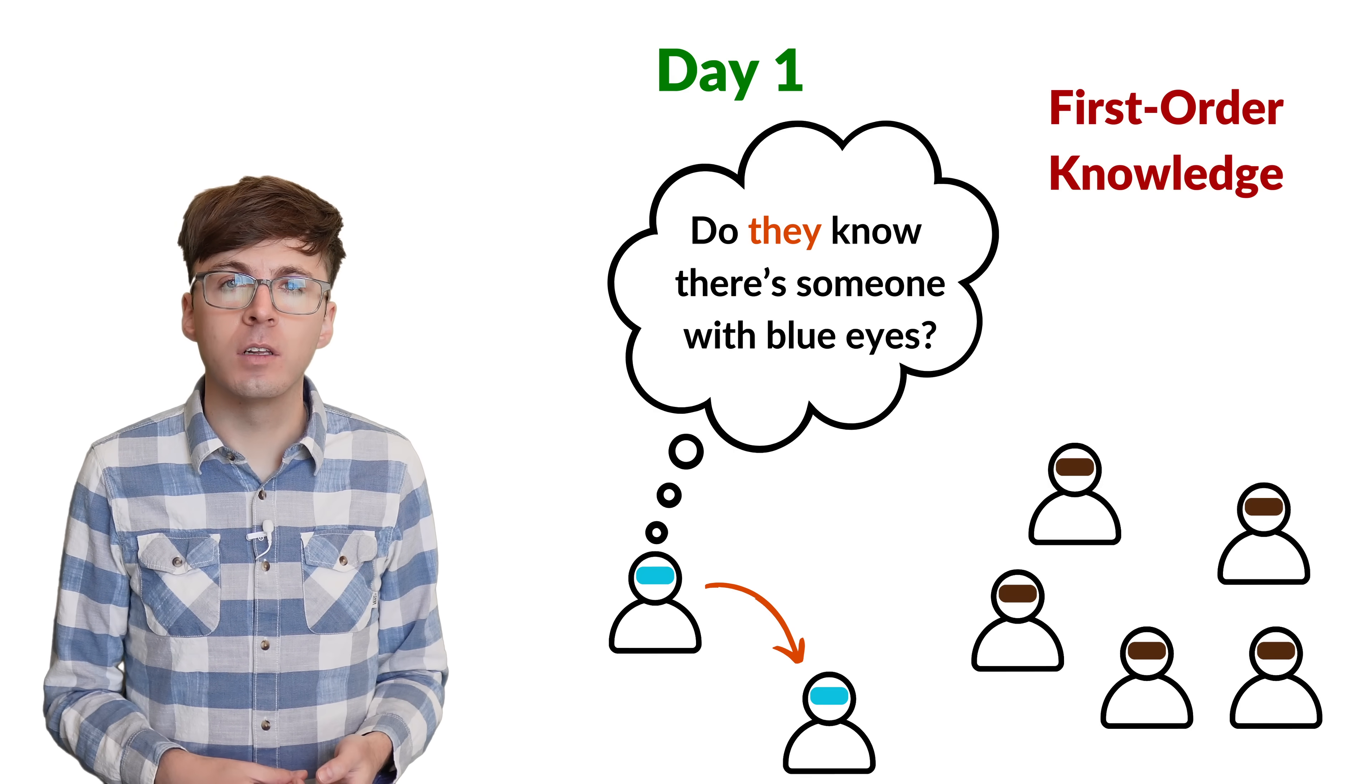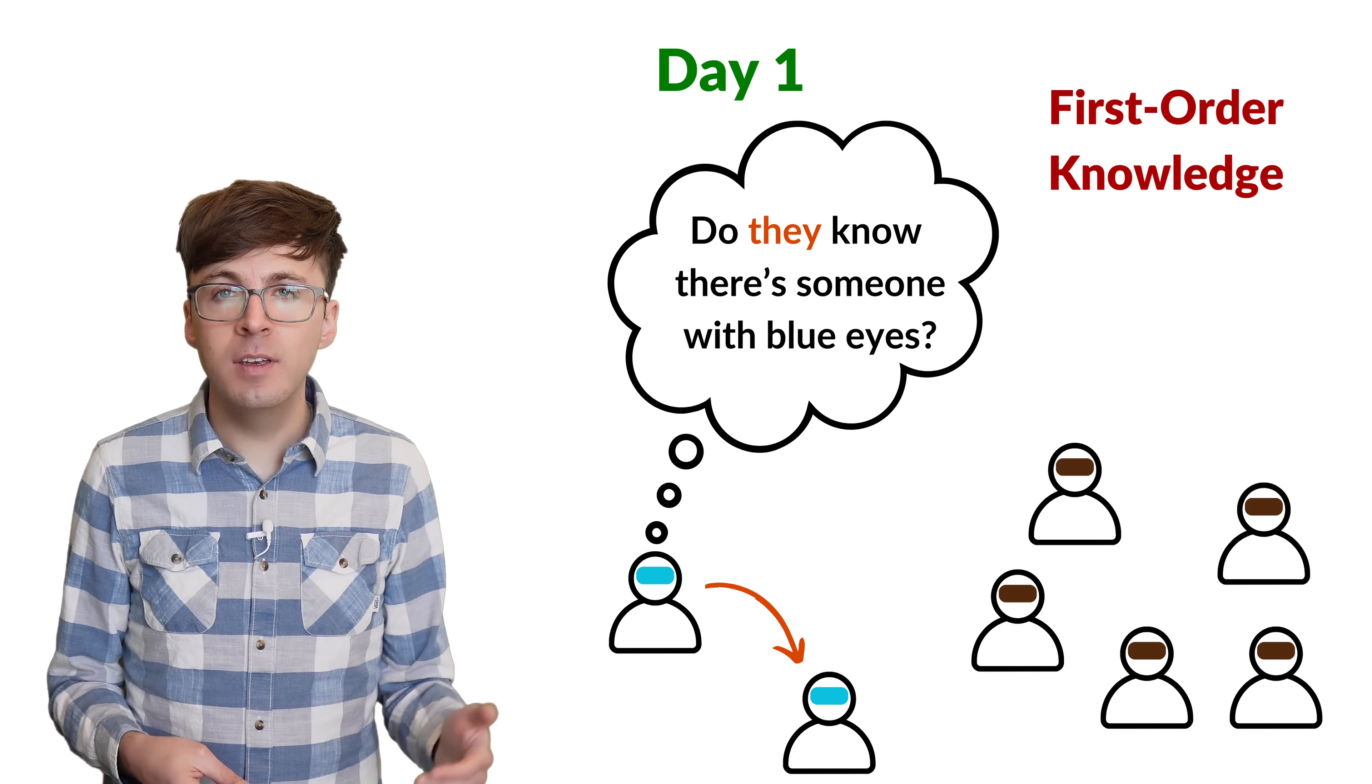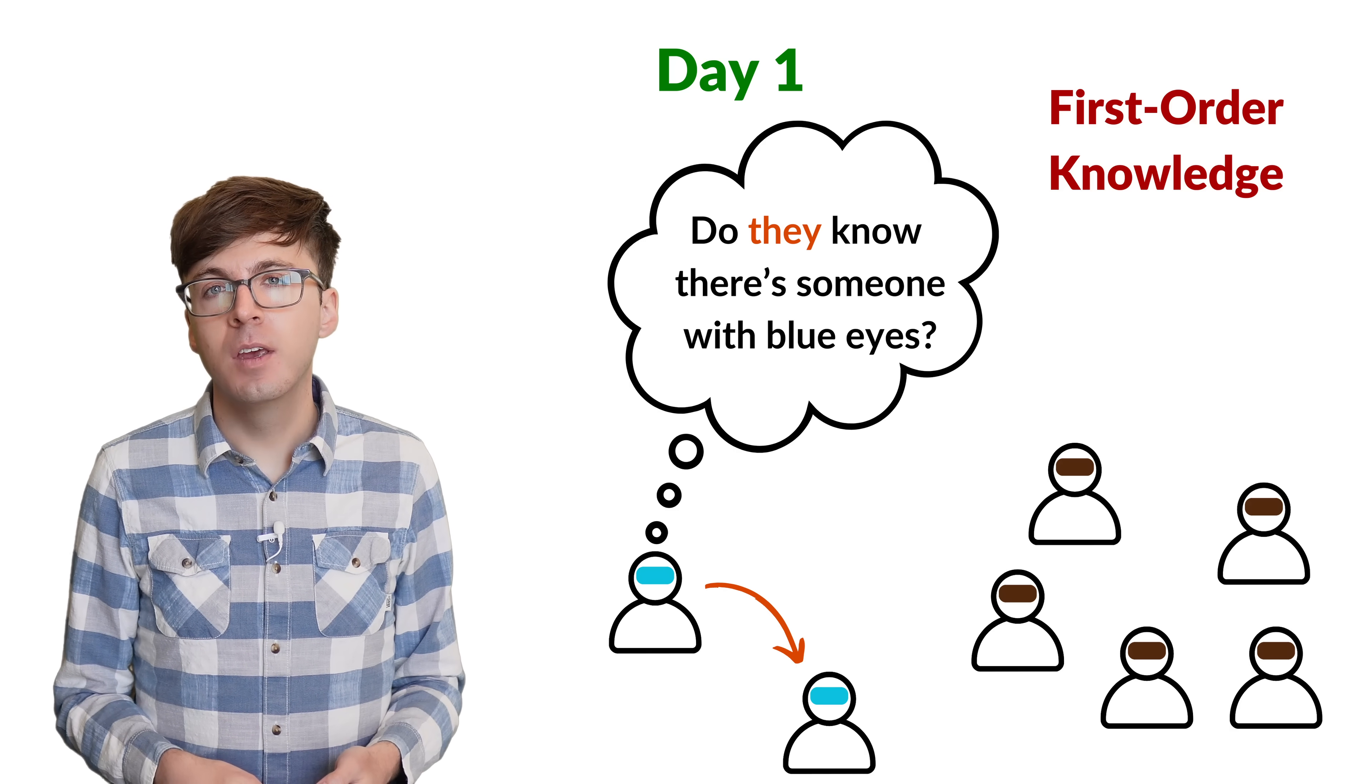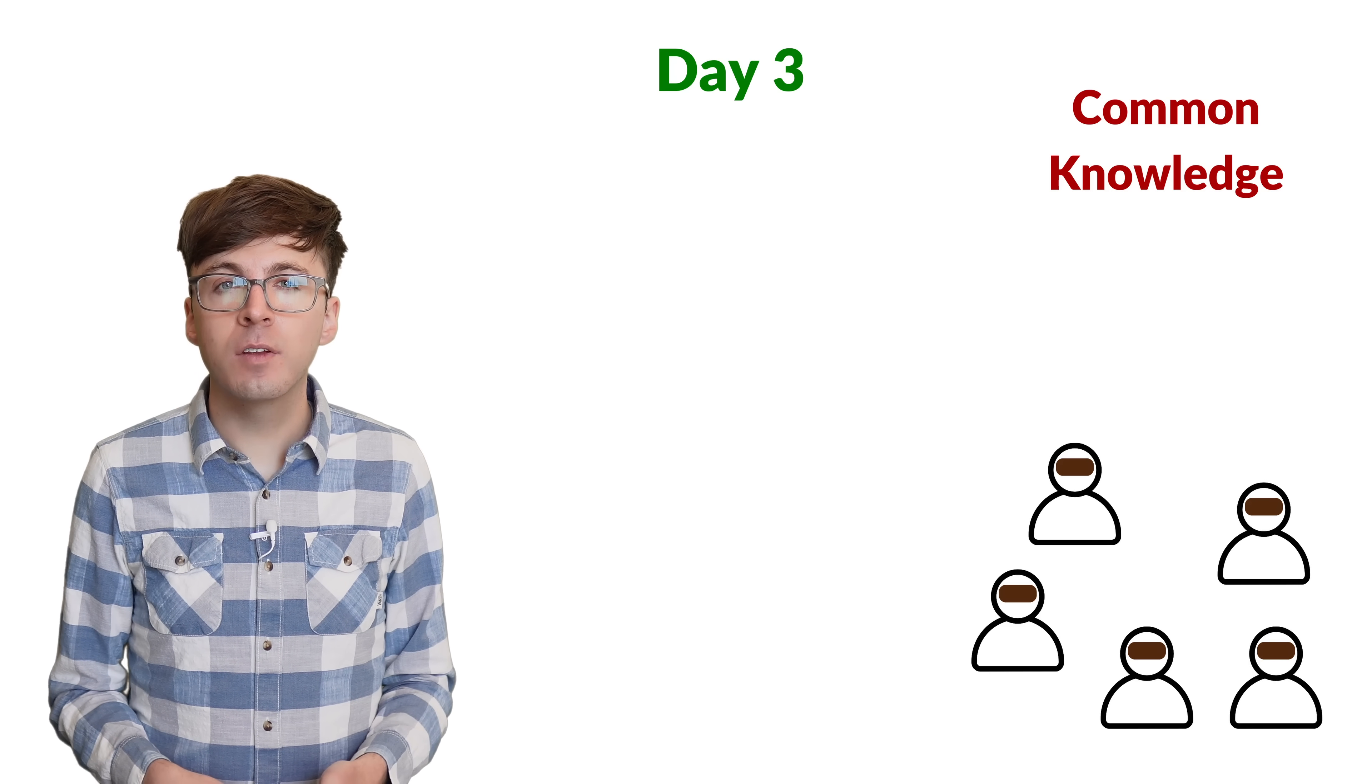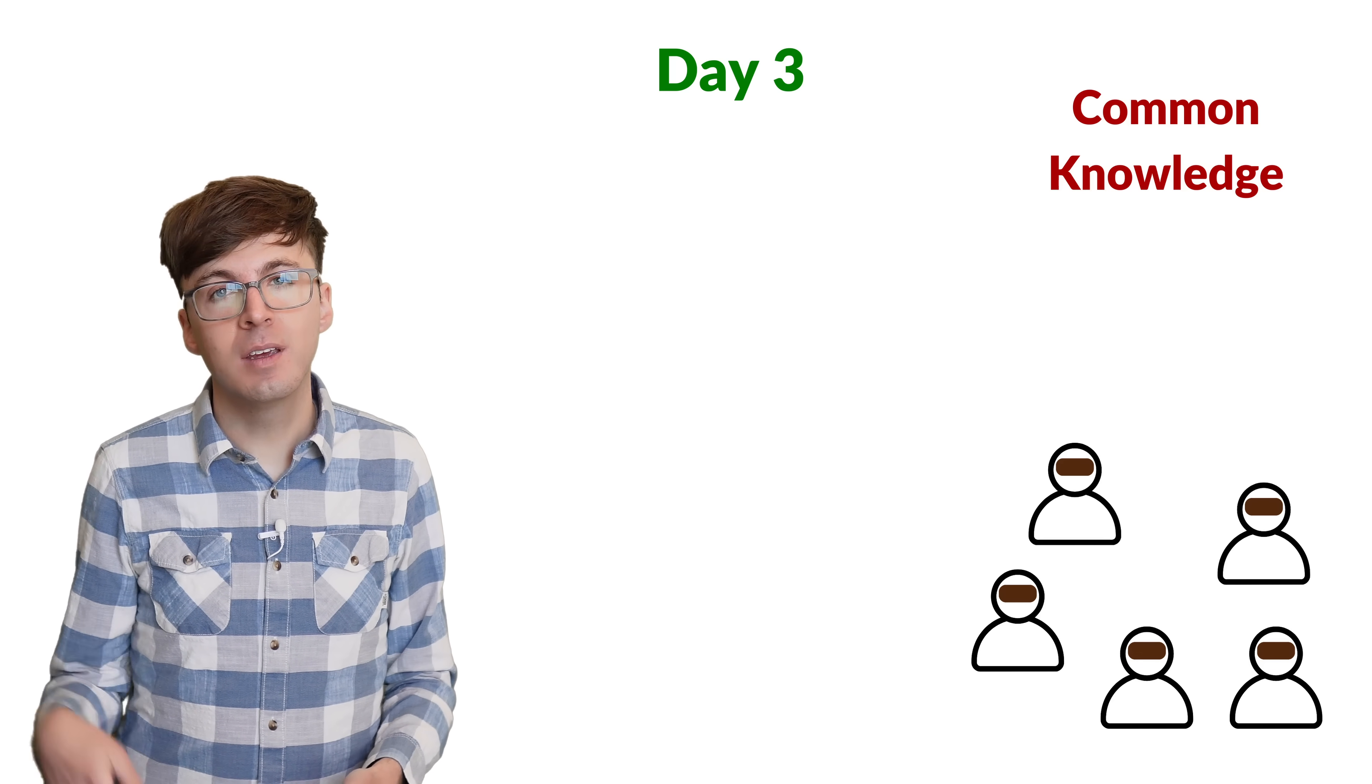This is called first order knowledge. Everyone knows that this statement is true, but not everyone knows that everyone has this knowledge. Each blue eyed person has seen a person with blue eyes, but they don't know if that person is aware there's anyone else with blue eyes. Once the stranger makes the statement, then everyone is on the same page. The fact there is someone with blue eyes on the island is now common knowledge, meaning that not only does everyone know it, but also everyone knows that everyone else knows it, and so on.